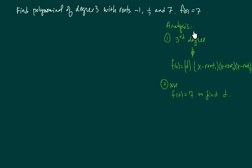The analysis looks something like this. If it's a third degree polynomial, then the function takes this form: a constant in the front, x minus root 1, x minus root 2, and x minus root 3.